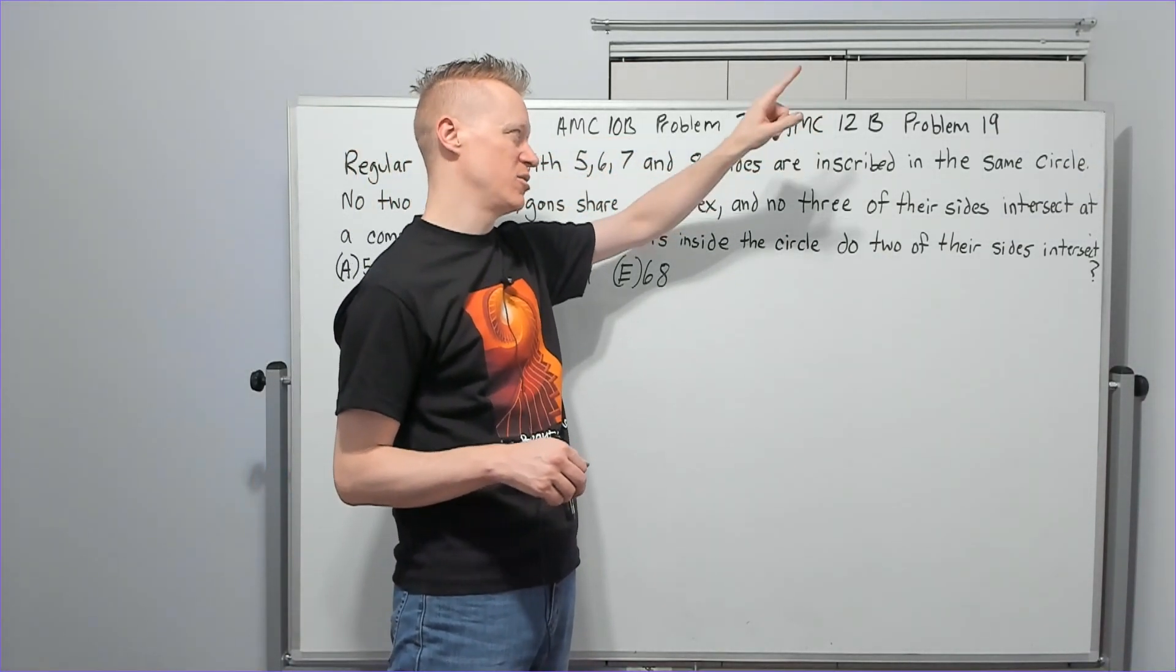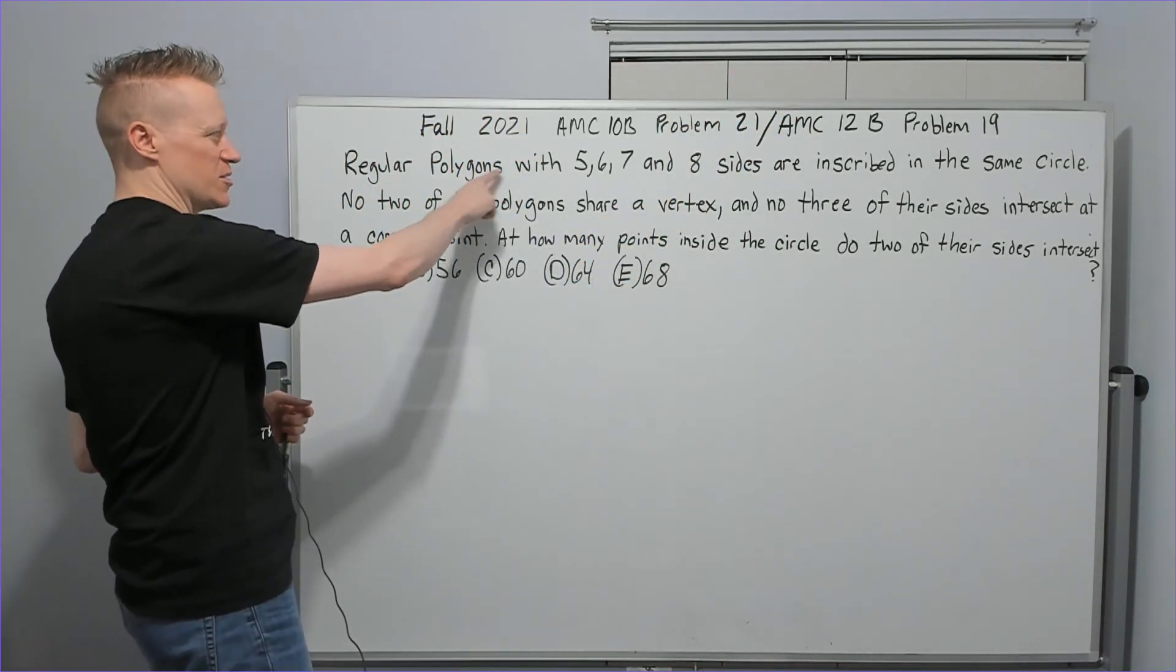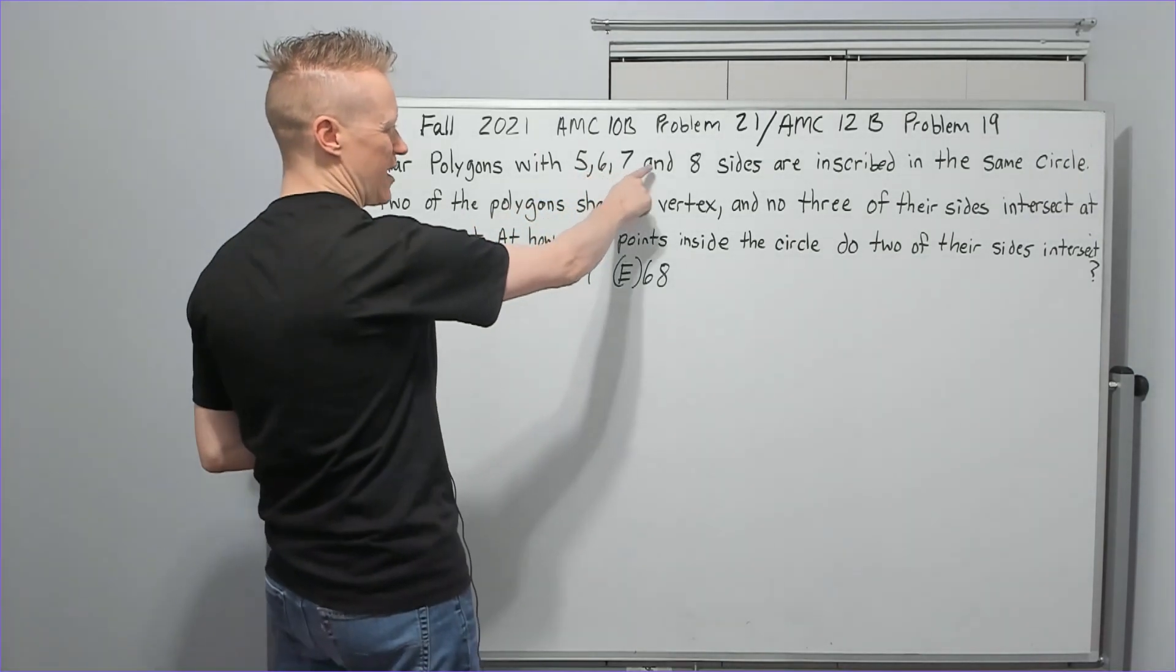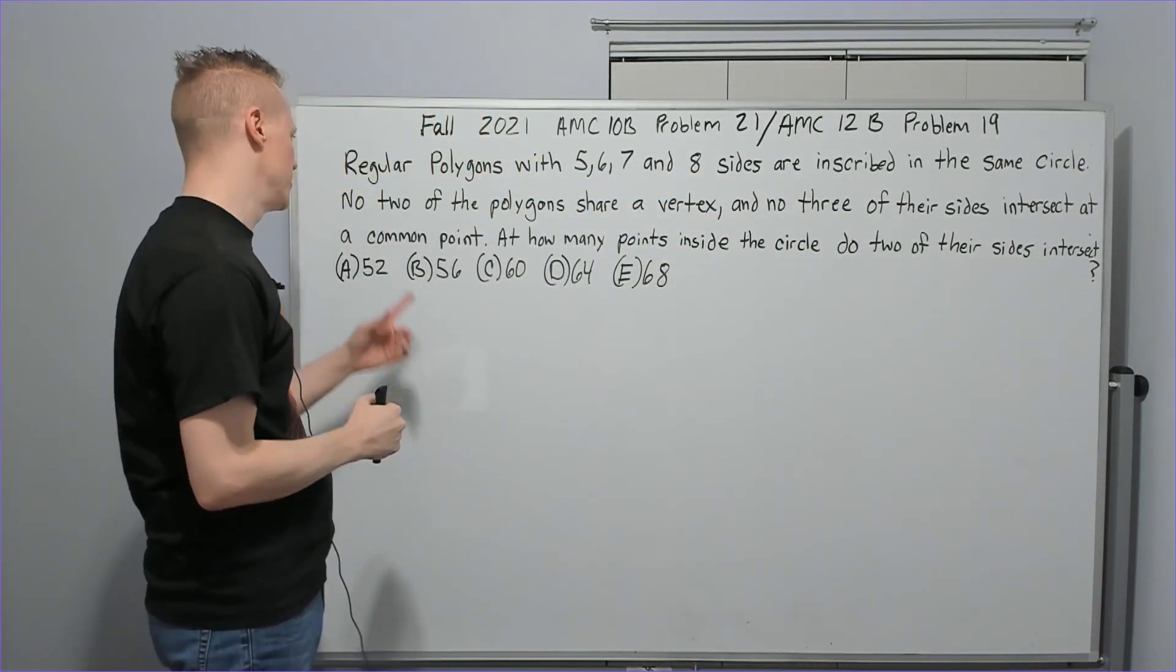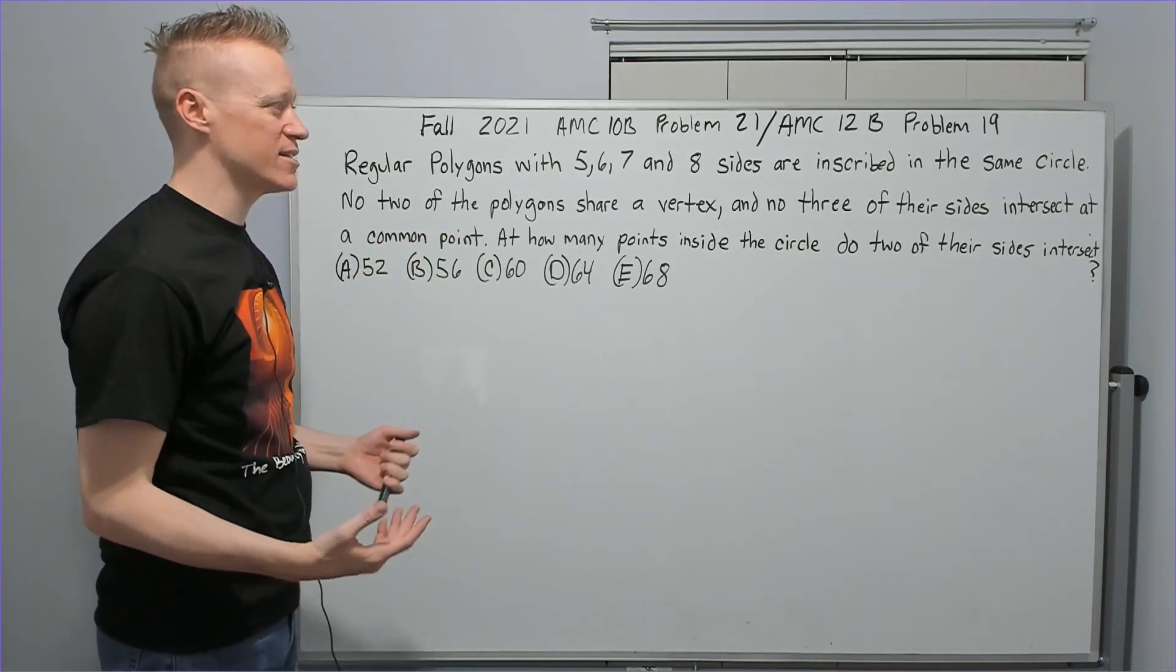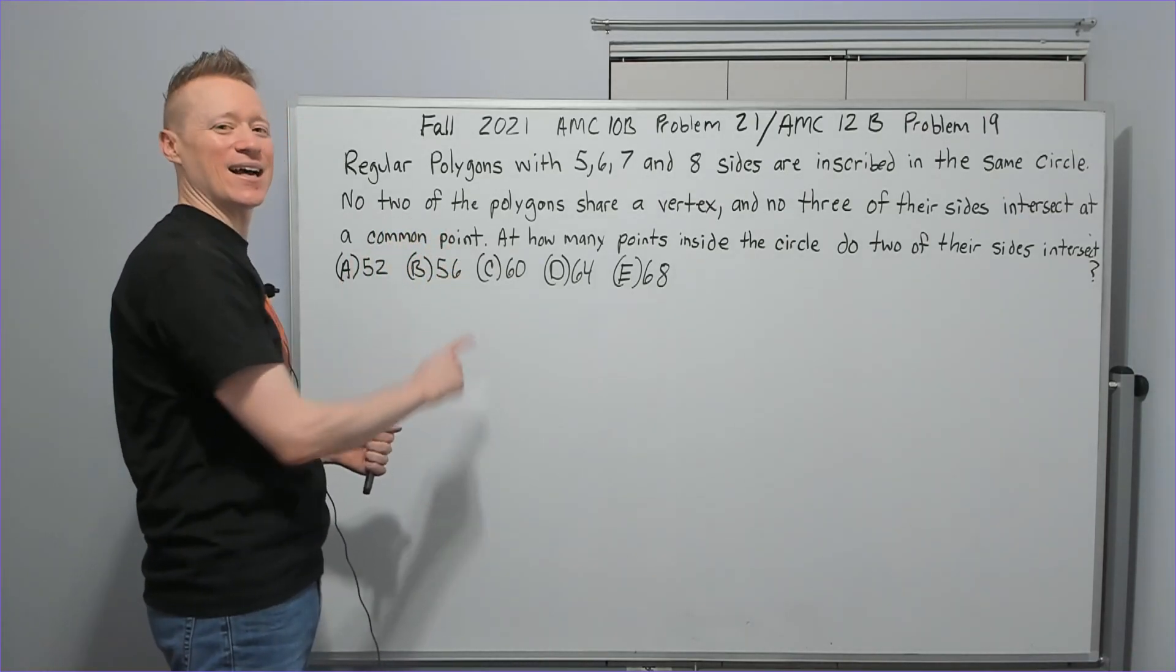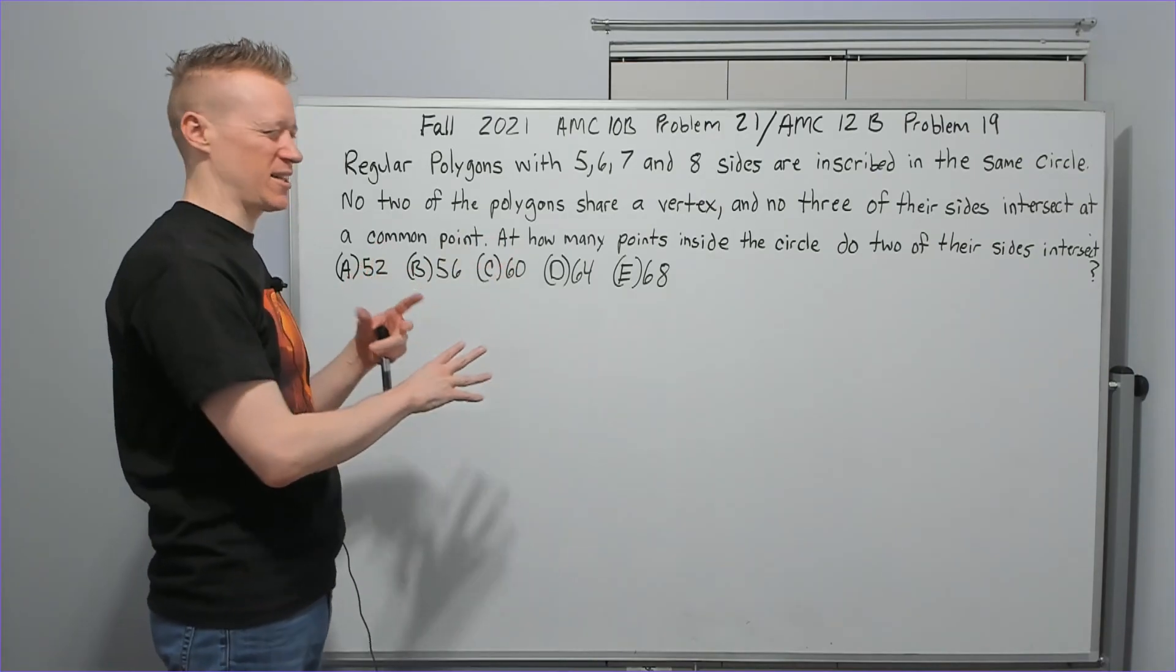Regular polygons with 5, 6, 7, and 8 sides are inscribed in the same circle. No two of the polygons share a vertex, and no three of their sides intersect at a common point. Okay, so let's process this because it has a lot of information.